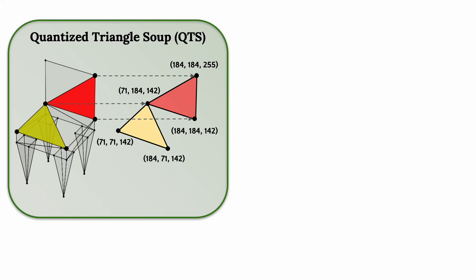Vertices and faces are combined into a unique data structure called quantized triangle soup. Every mesh face is made up of 3 vertices, and each vertex is defined by a triplet of categorical values.